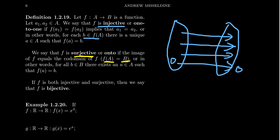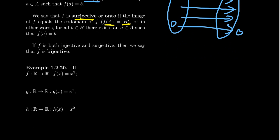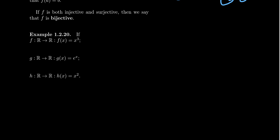Injective means one-to-one: no one in the codomain is hit twice. Surjective or onto means that everyone in the codomain is hit at least once. If you put these two notions together, it's called bijective — a bijective function. Sometimes it's called a one-to-one correspondence because if you're injective, everyone in the codomain is hit at most once, and if you're surjective, everyone is hit at least once. Put those together and everyone in the codomain will be hit once and only once. We'll talk more about bijective functions in the next lecture.